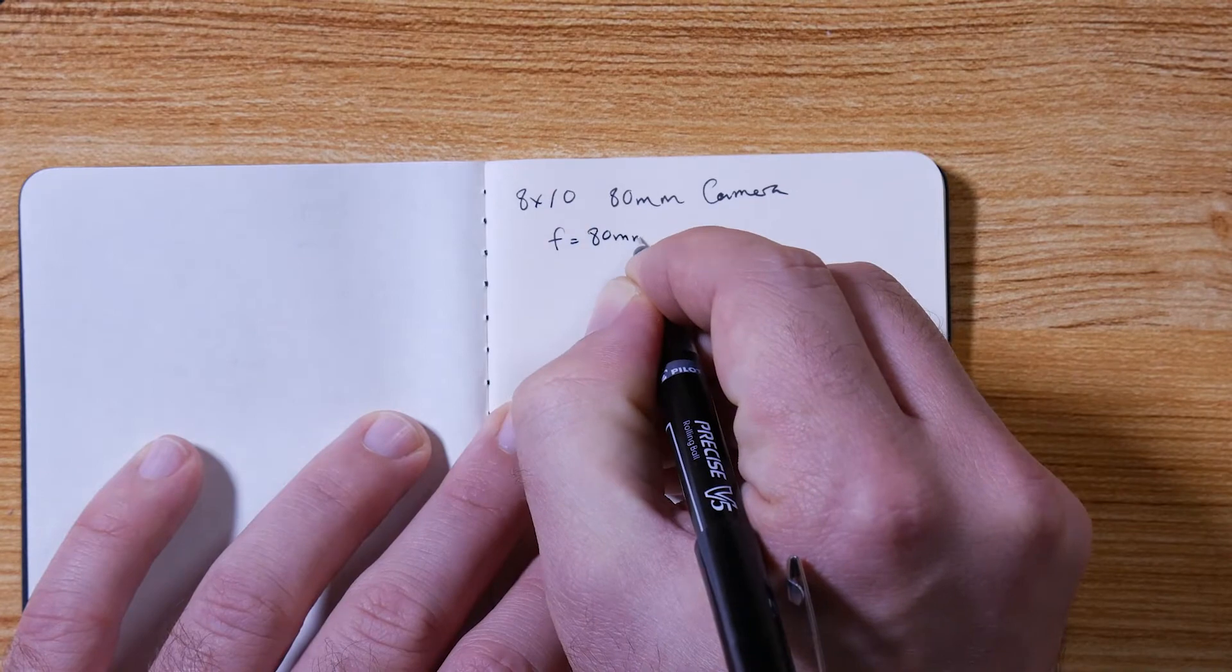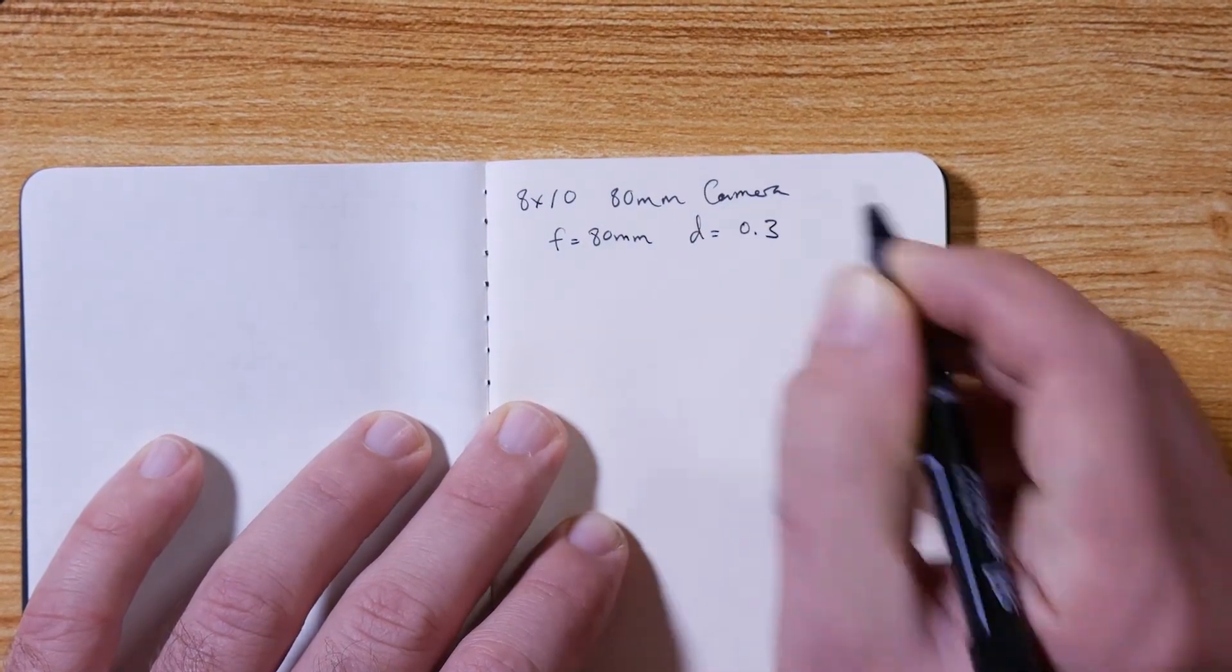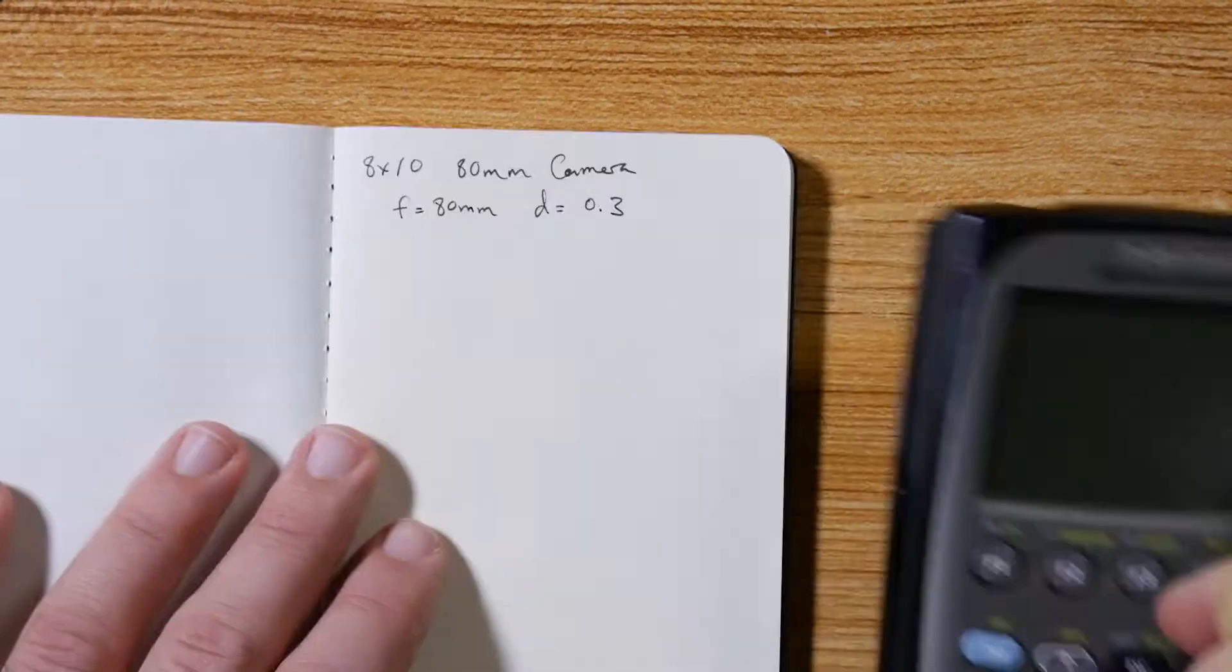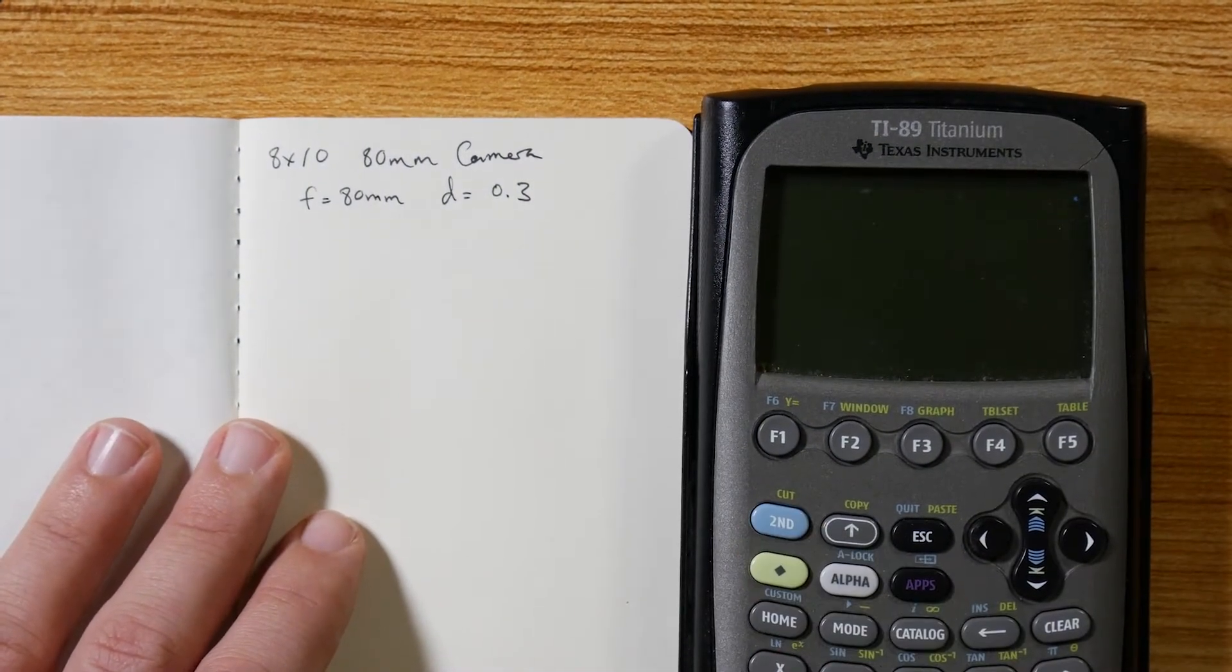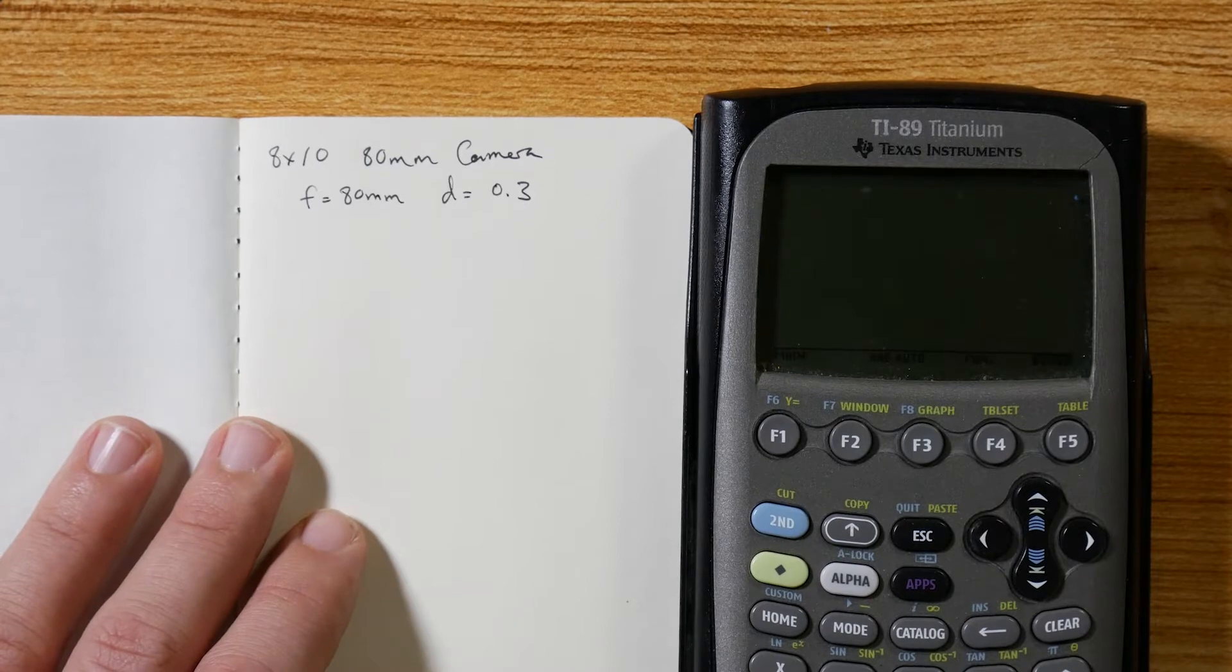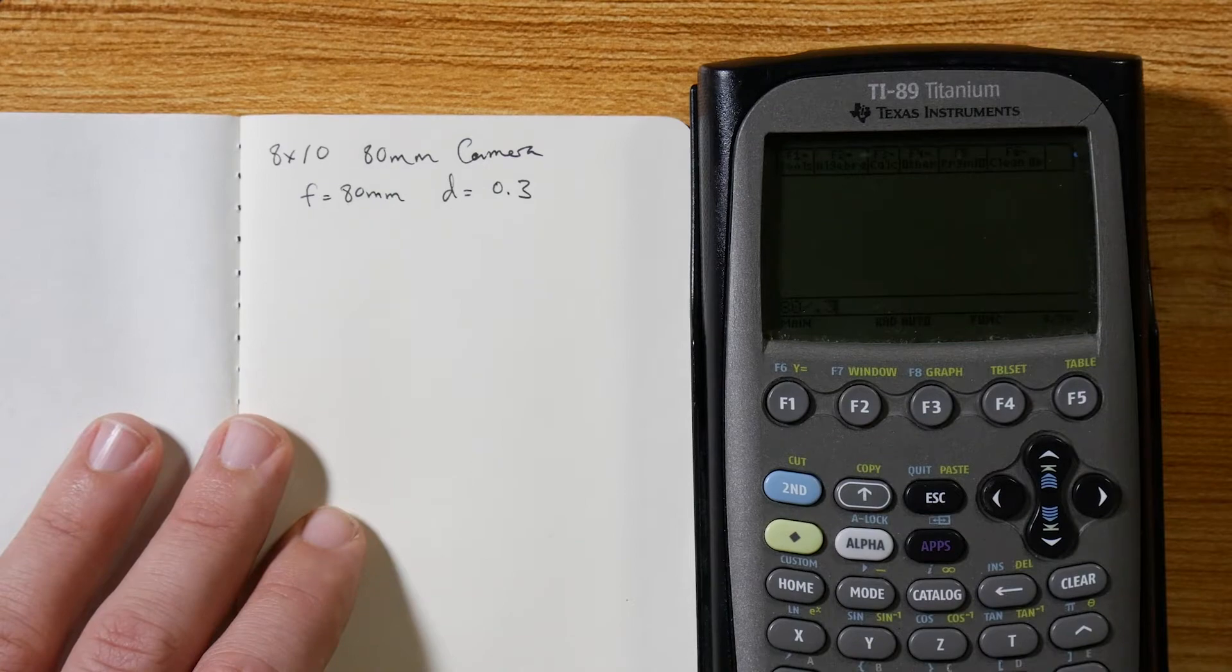So we have a focal length of 80 millimeters and a pinhole diameter of 0.3. Then I can bust out my calculator - shout out to all my TI-89 titanium edition fans. So I take 80 divided by 0.3.